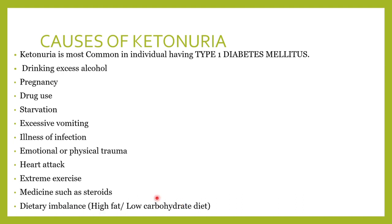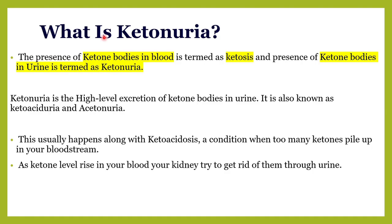A ketogenic diet — high fat and low carbohydrate — can also lead to ketonuria. To remember: ketones present in the blood is called ketosis; ketones seen in the urine is ketonuria. The three ketone bodies are acetone, acetoacetic acid, and beta-hydroxybutyric acid, all metabolized in the liver. In Type 1 and Type 2 diabetics, ketones can be excreted in the urine.